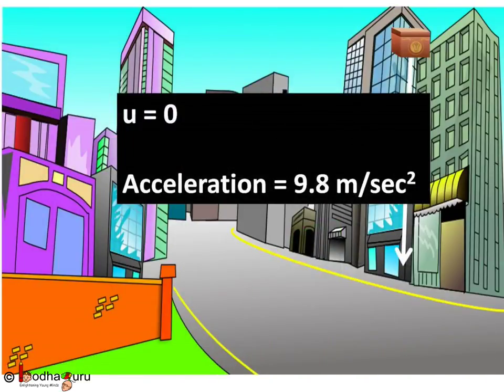Like in case of falling object example. Initial velocity was 0 because the box was in my hand. The gravity started pulling it down after I left it. The acceleration is 9.8 meter per second square. This is denoted by g, that is acceleration of gravity.